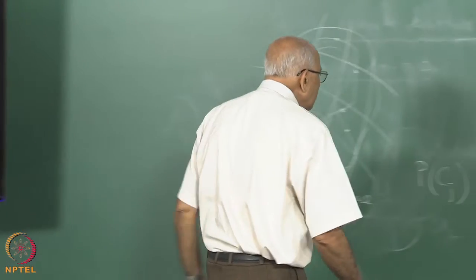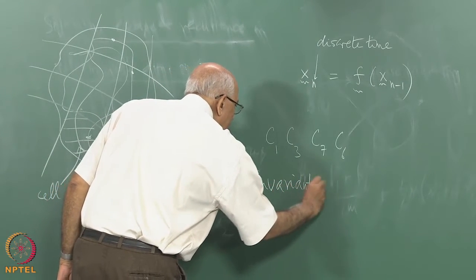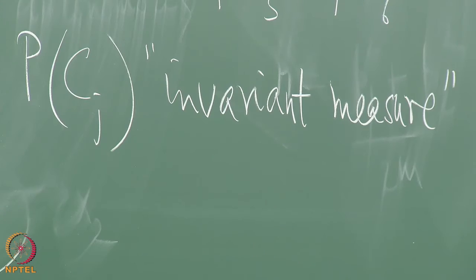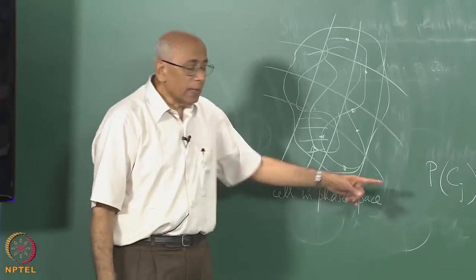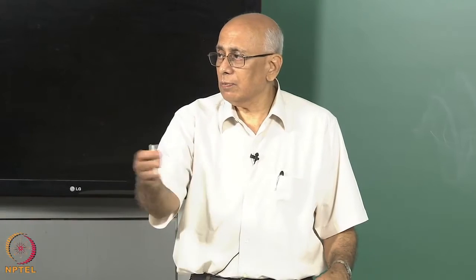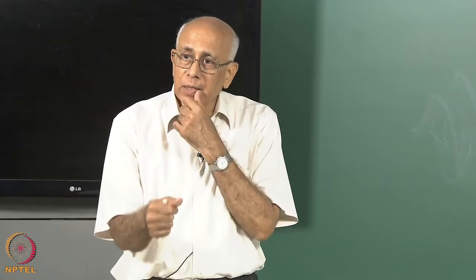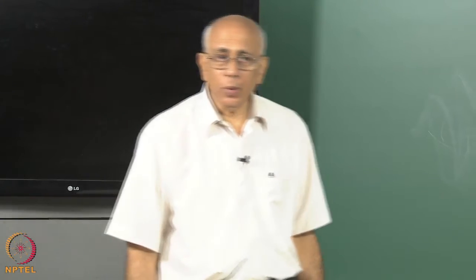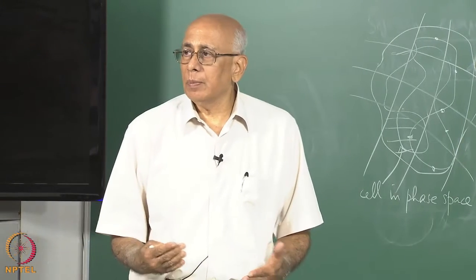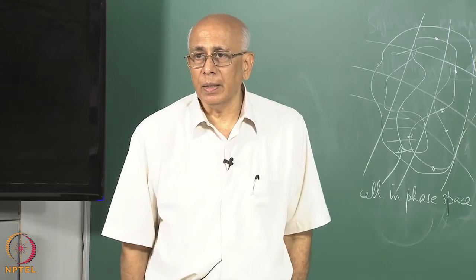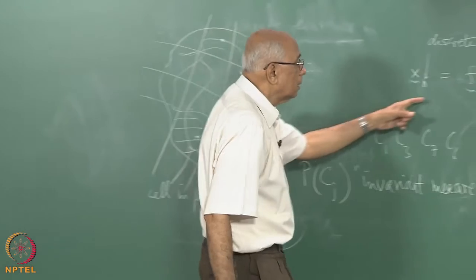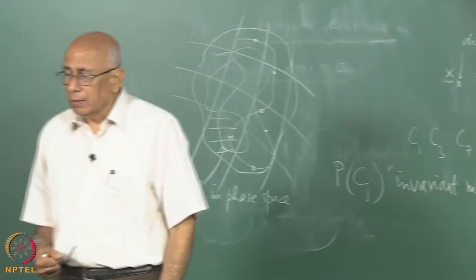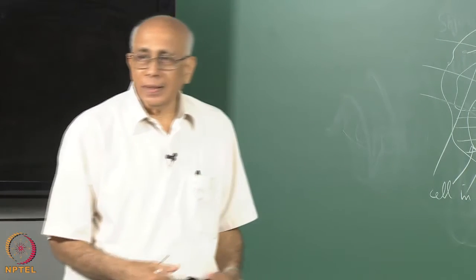We have an invariant measure — it is like the stationary probability. In contrast to noisy problems with thermal fluctuations where I had to specify the statistics of the noise externally, here the dynamics itself generates p(cⱼ) because in principle it is deterministic dynamics. From the evolution equation I should be able to determine what the invariant measure actually is. The tool for this is called the Frobenius-Perron equation, and the idea is extremely simple.